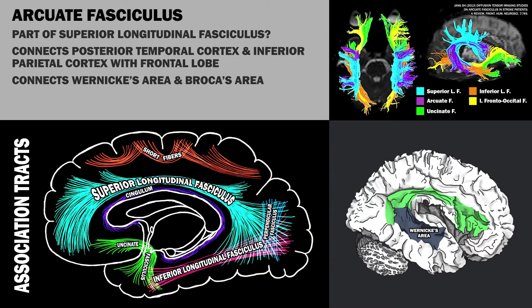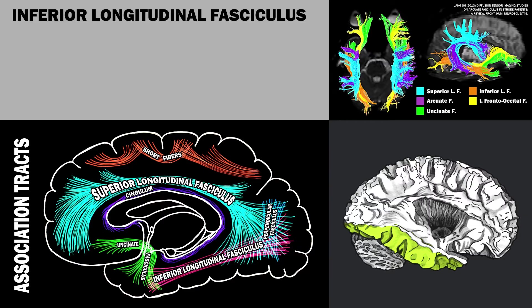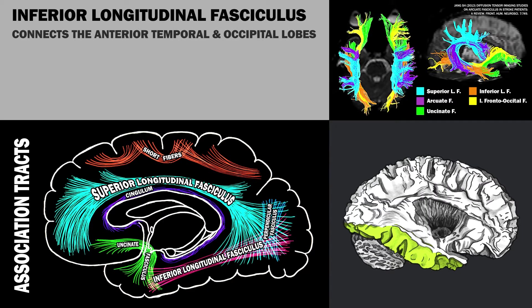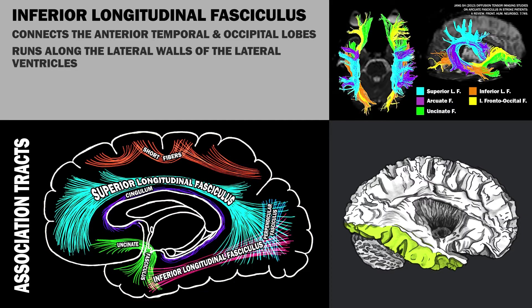Importantly, the arcuate fasciculus connects Wernicke's area in the temporal lobe and Broca's area in the inferior frontal gyrus. Wernicke's area is concerned with the comprehension of speech, while Broca's area is concerned with the production of speech. The inferior longitudinal fasciculus connects the anterior temporal lobe and occipital lobe, running along the lateral walls of the lateral ventricles.